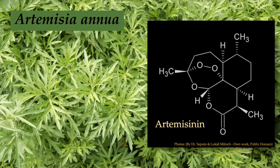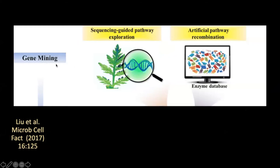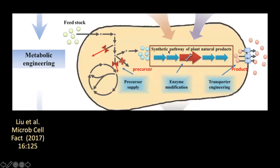Synthetic biology has three main components. First, we mine for genes — we take a plant or organism, sequence its genome, and determine the pathways and what it produces. The little machines used to make chemical compounds are called enzymes. We build a database of those enzymes and then construct an artificial or synthetic pathway.